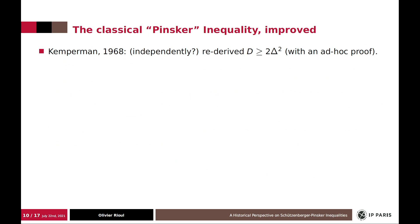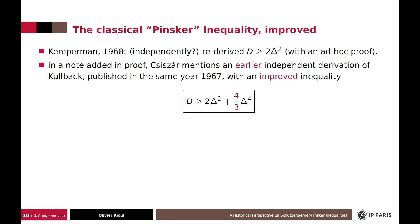However, the story is not over. First, Kemperman, 1968, apparently derived independently the same inequality. But also, Csiszár mentions earlier independent derivation of Kullback, 1967, which is even better because it includes a second-order term in delta to the 4. However, the constant of the second-order term appeared to be wrong.